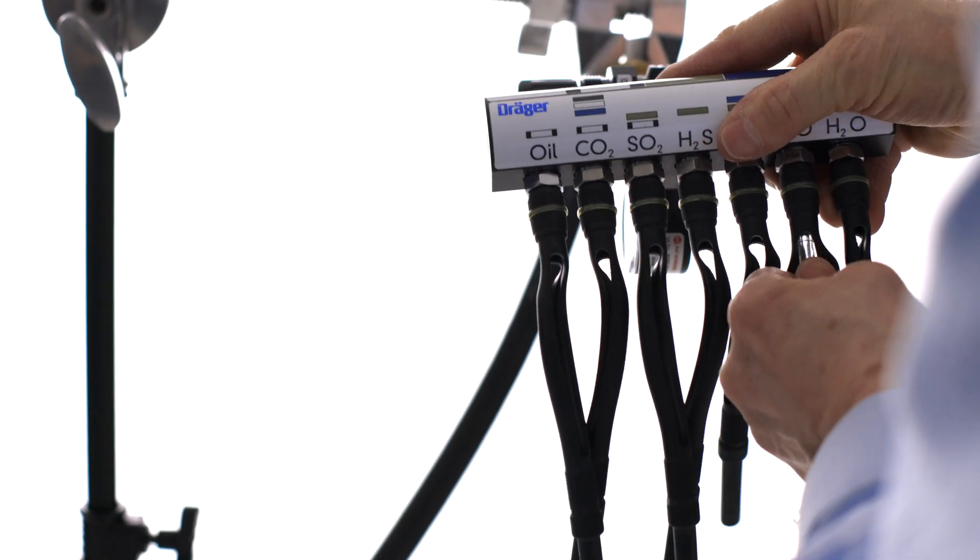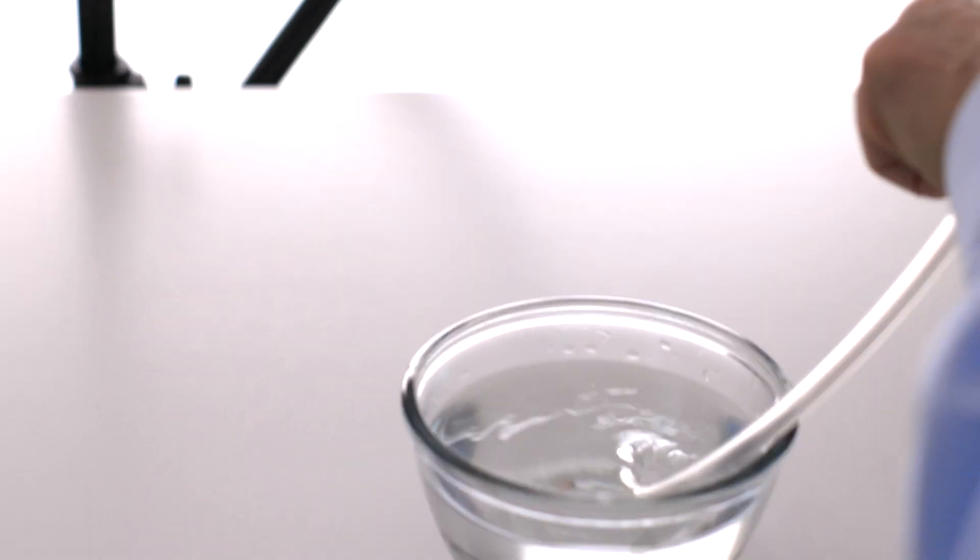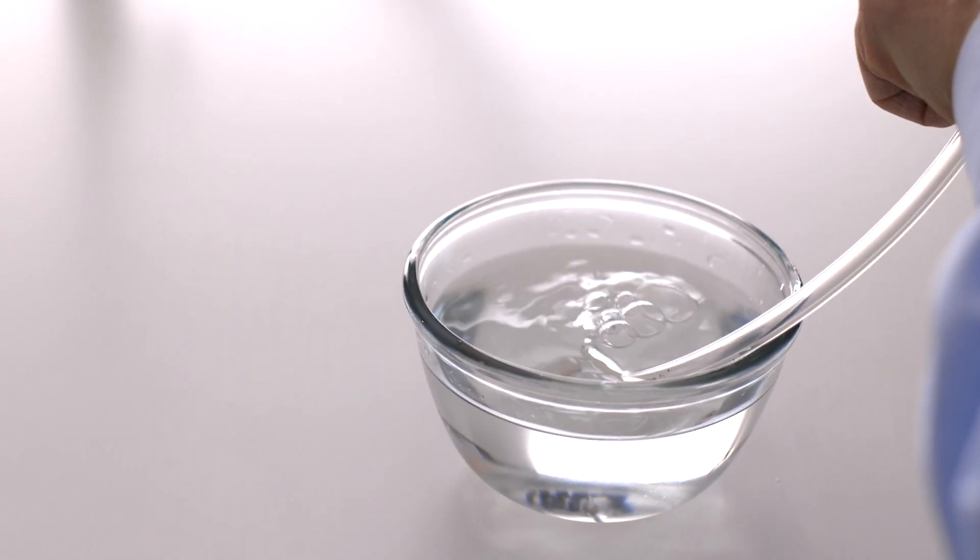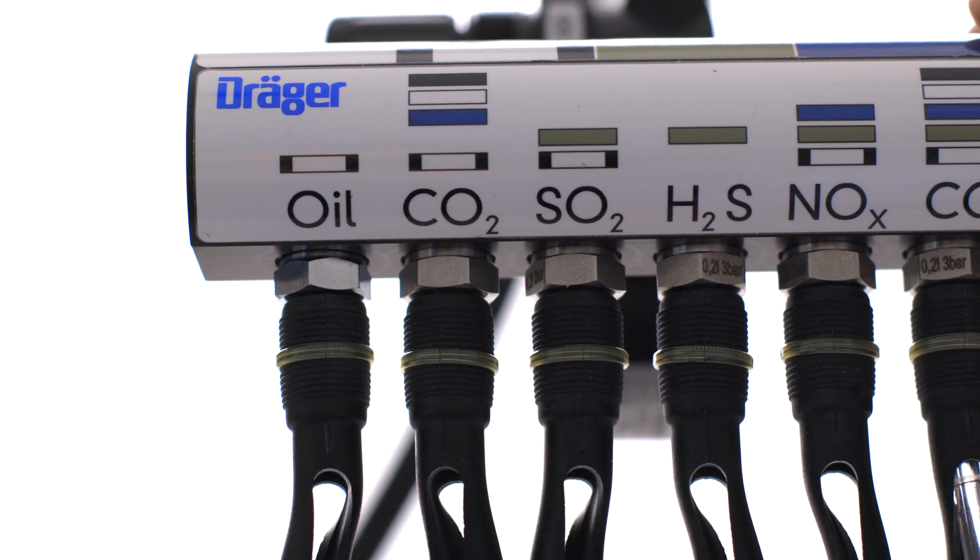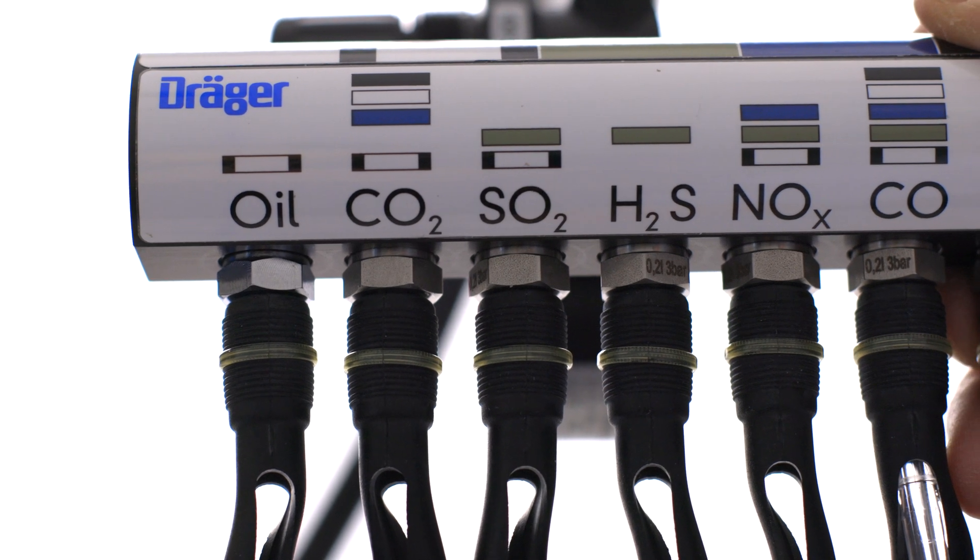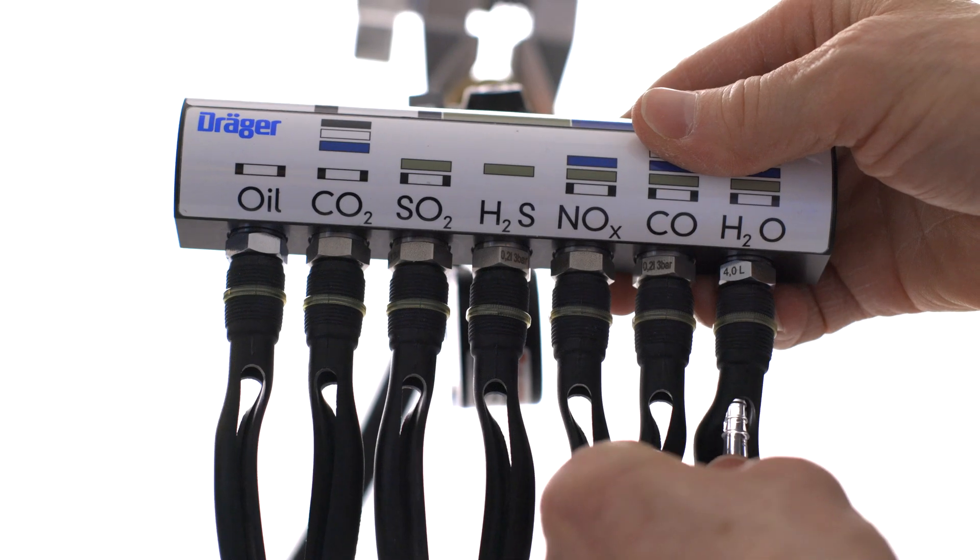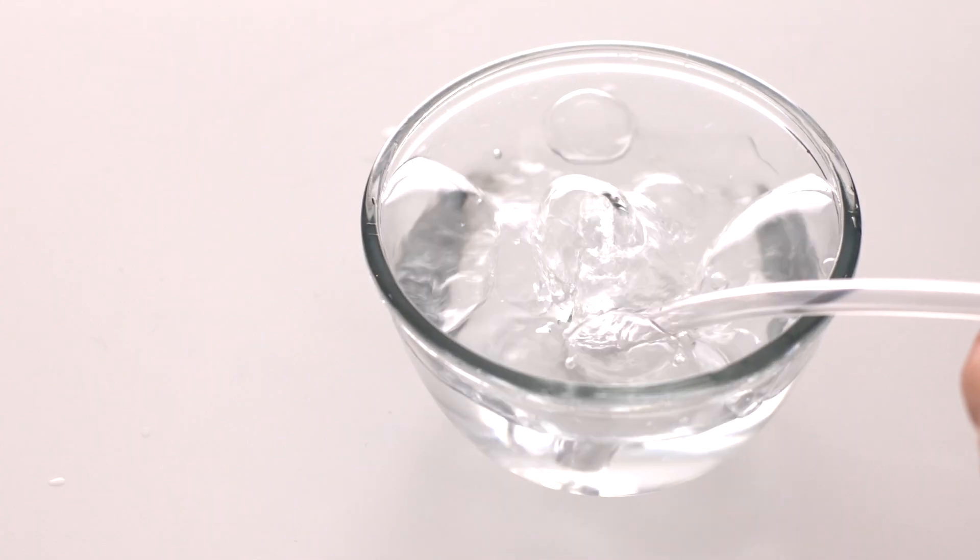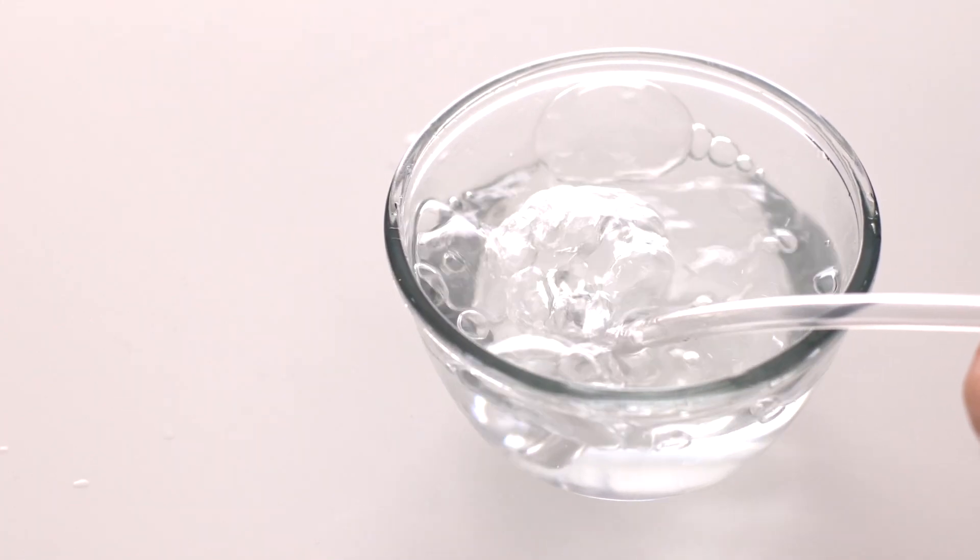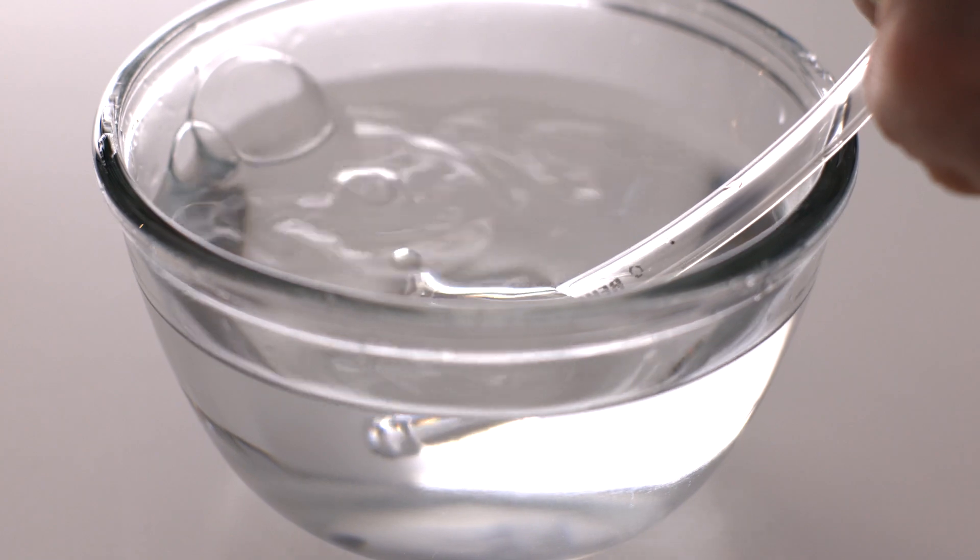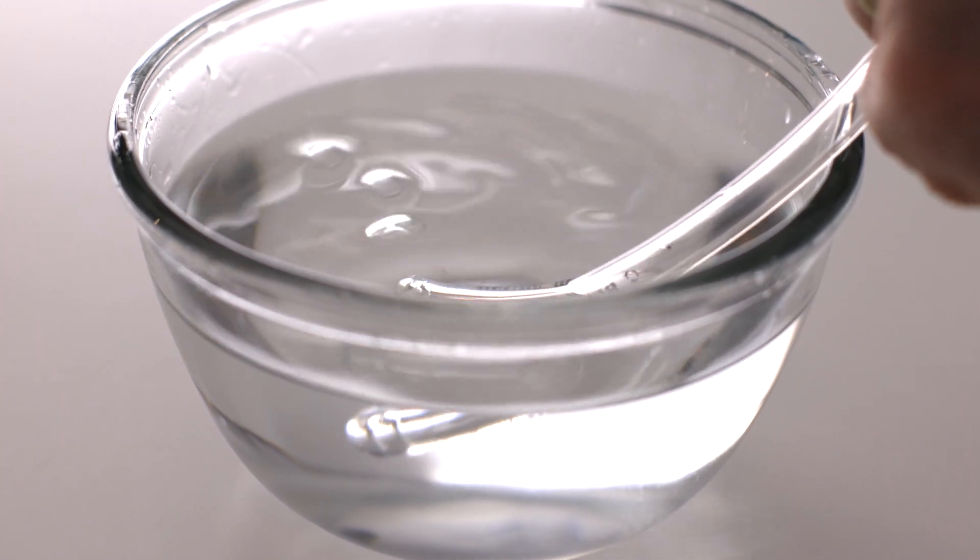Periodically between uses, you'll do a bubble test which checks the flow. Connect the hose to each tube holder, placing the other end of the hose in a container of water. However, the carbon dioxide, sulfur dioxide, hydrogen sulfide, nitrous fumes, and carbon monoxide will have a rapid bubble rate, whereas the oil and water will have a much higher bubble rate. If the bubble rate is slow, do not use the Aerotest and send it to the Drager Service Depot.